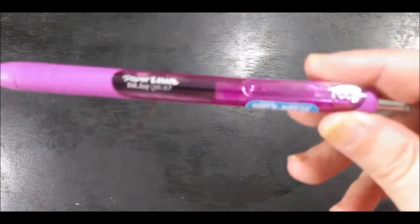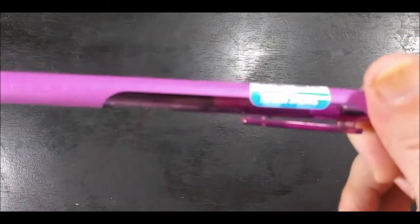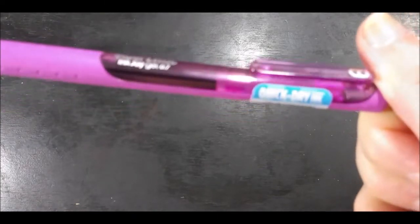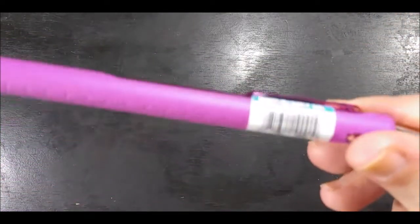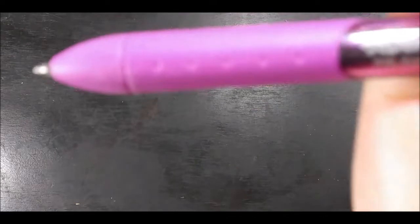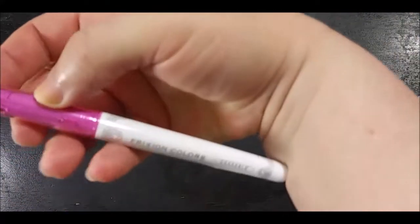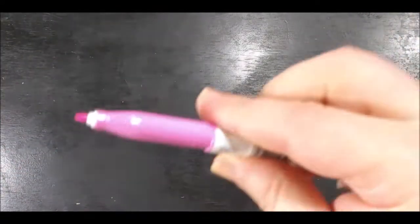Next is Paper Mate in pink. It's a 0.7, your regular pen. Then we've got the Friction marker, which is also in pink. I believe it's a highlighter. Yes, it is a highlighter.